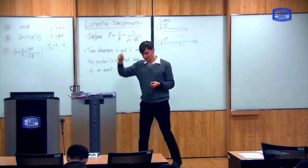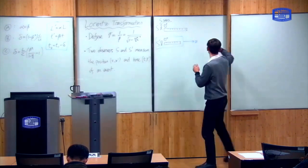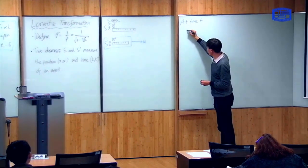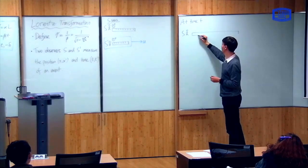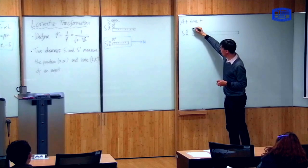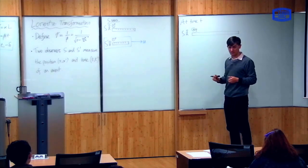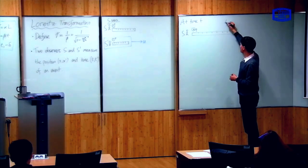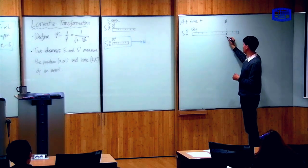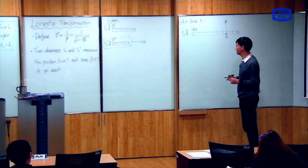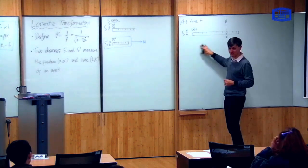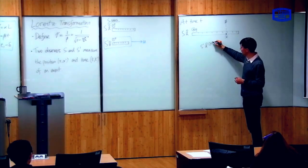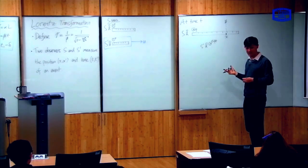That's the original situation. Now something happens at time T. S has a long ruler and a clock measuring time T, and he sees an event at position X — something happens over here on his ruler, and he measures that it happens at position X. Now S prime has moved somewhere over here, and his clock will be measuring time T prime, which is beta times T — time dilation. His ruler will look contracted, and he is moving.